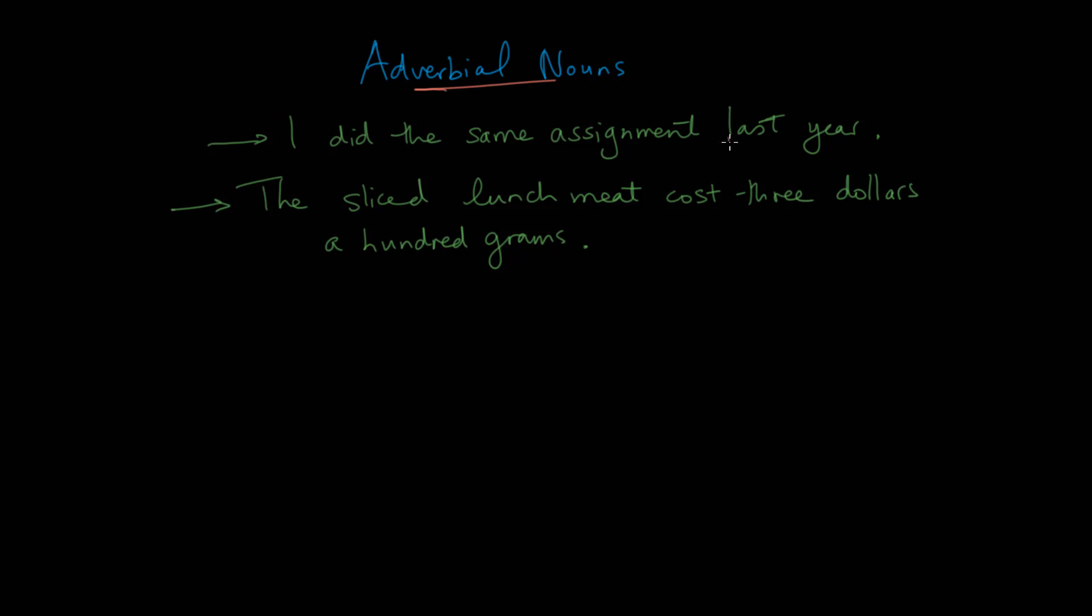Now if you look at a couple of phrases here, we have last year and we have a hundred grams. What you can see is that they end with a noun, year and grams, and then we have a few modifiers. Last is an adjective, and is the article, 100 is also an adjective.